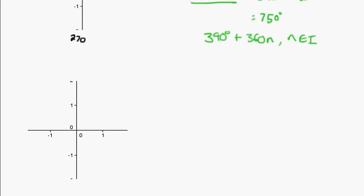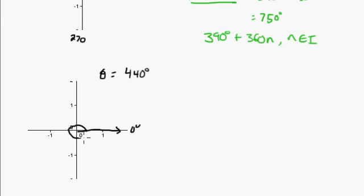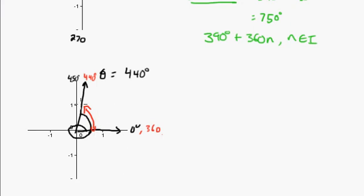Let's do one last example: theta equals 440 degrees. Starting from 0, we go 90, 180, 270, 360 — and since 360 plus 90 is 450, then 440 is just a little less than 450, landing right about there. The reference angle is closest to the x-axis: 440 minus 360 is 80 degrees. So the reference angle is 80 degrees.